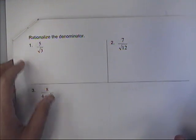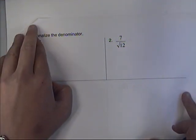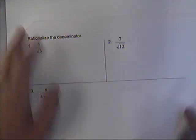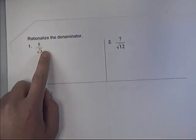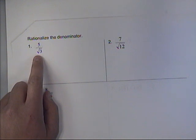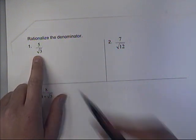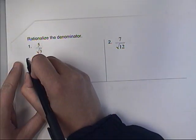Rationalize the denominator. Basically when you have a square root here, that is not proper format for a fraction. So what we want to do is we want to get rid of that square root.